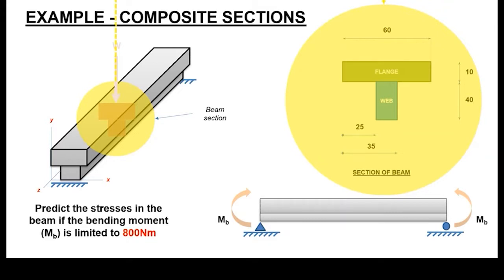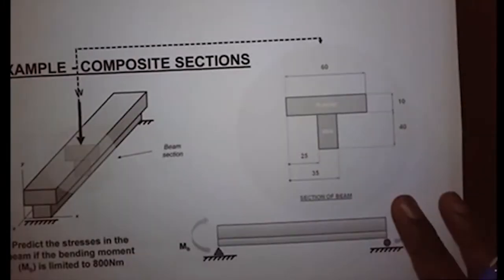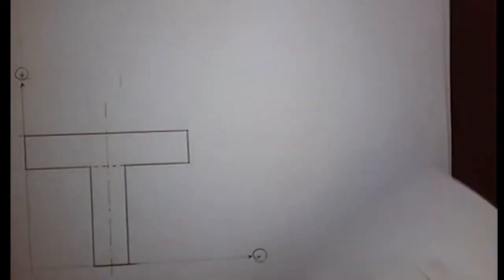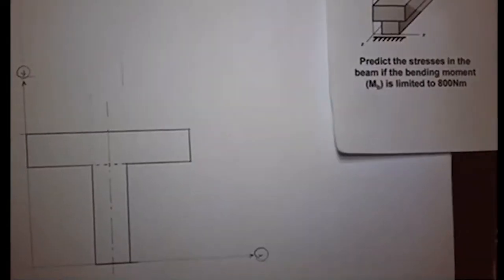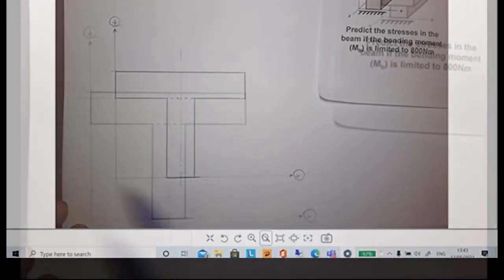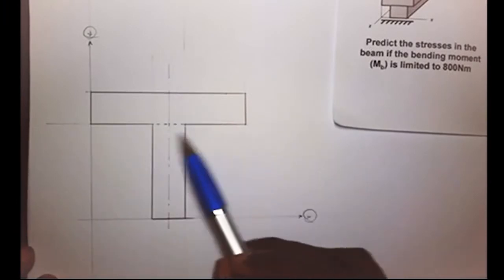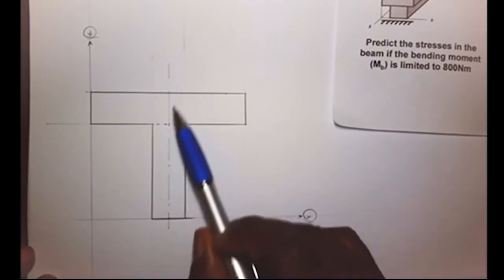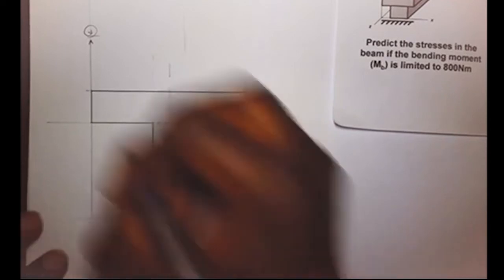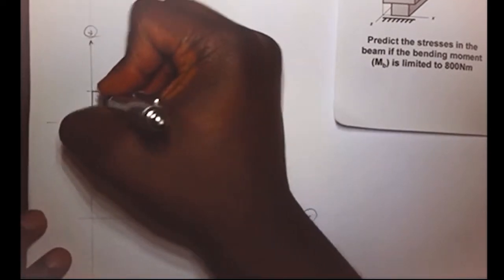Once we've worked out the value of I, we have enough information to determine what the stresses are for the beam structure. So let's start. The first thing we do is identify a reference plane, and then segment the composite form into two segments. We're going to call this segment one.